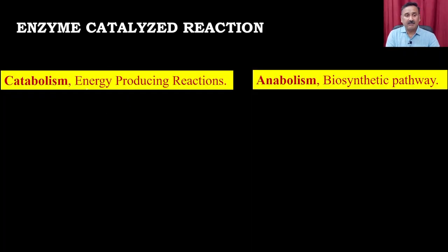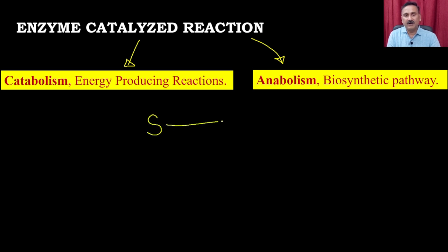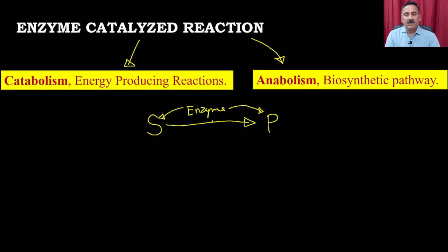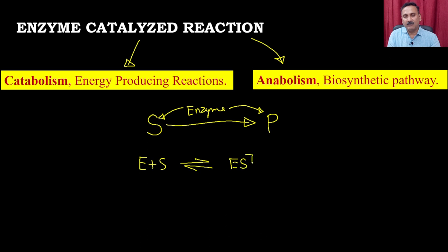In the previous module, we discussed that enzymes catalyze different types of reactions — either catabolic or anabolic. In both pathways, the enzyme converts a substrate into a product. The enzyme interacts with the substrate and releases the product. When this enzyme-substrate interaction occurs, it actually forms the enzyme-substrate complex.